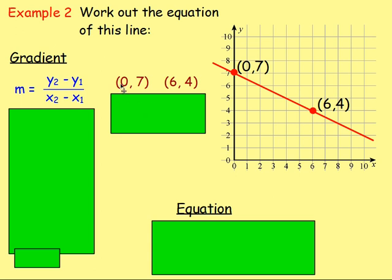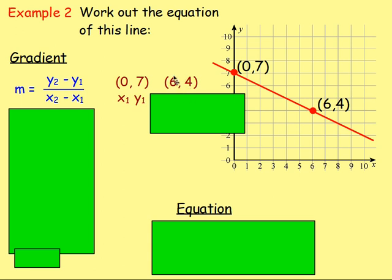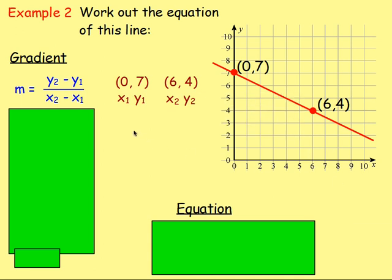With each point we've got an x-coordinate and a y-coordinate. Call one of them point 1 — so x1 and y1 — and the other point 2 — so x2 and y2. It doesn't matter which way around you label the points. If you swap them, you'll end up with negatives in the equation that cancel out, giving you the exact same gradient.